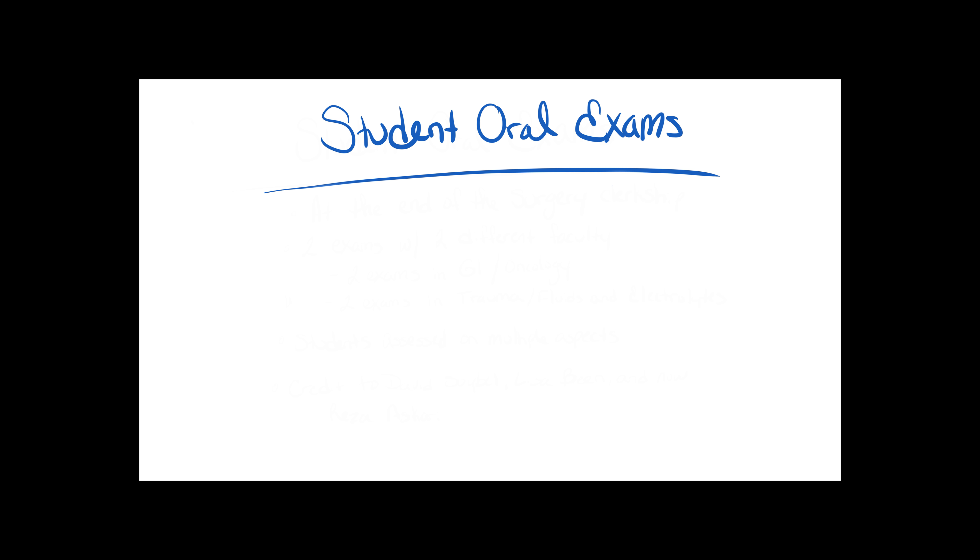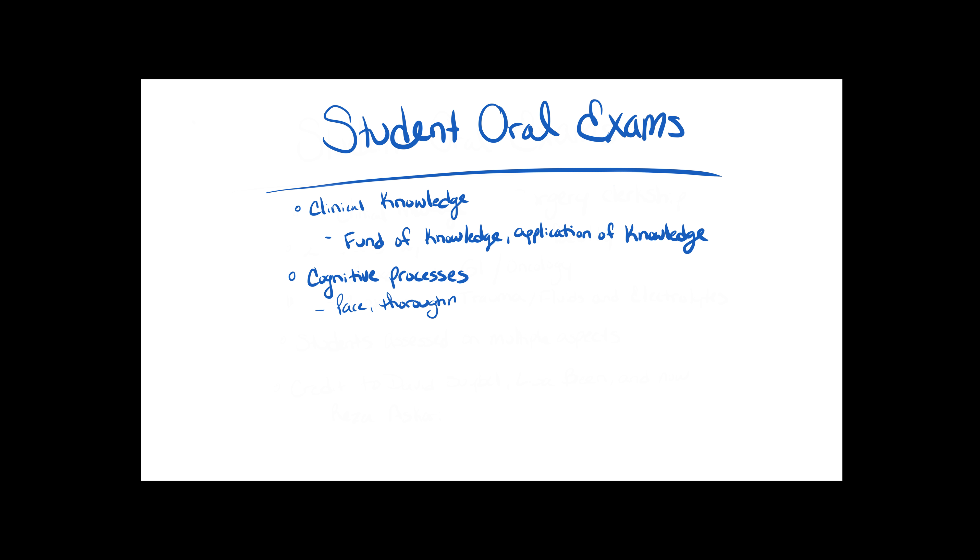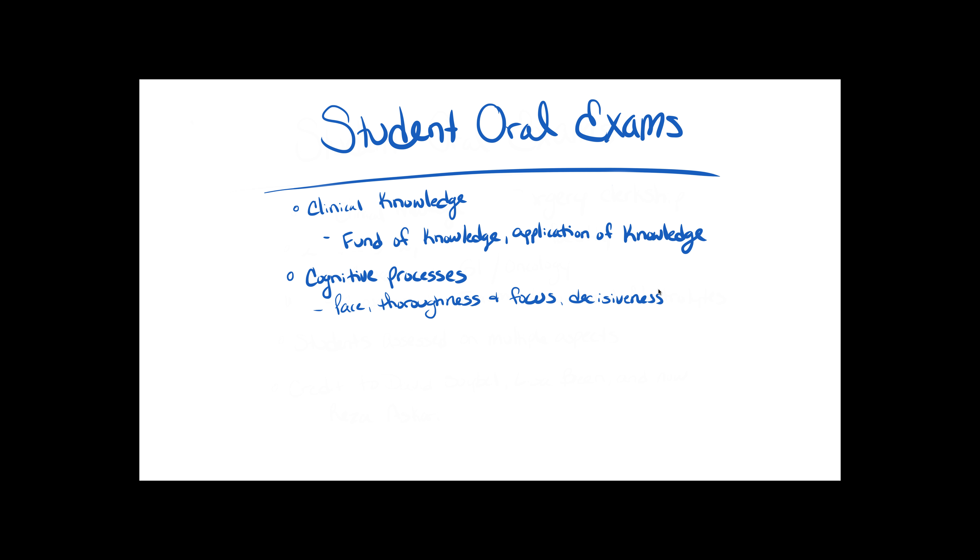You can see on this slide the various components that we assess during the student oral exams. One is simply clinical knowledge and what is their fund of knowledge, but more importantly, how do they apply that knowledge. We look at their cognitive processes to help us determine that application of knowledge. We assess them on the pace at which they answer the questions, on how thoroughly they're able to answer them and whether they're able to focus on the important topics, and also their decisiveness, because we will often ask them not only for a differential diagnosis, but also for a final diagnosis and a surgical treatment decision.